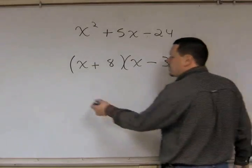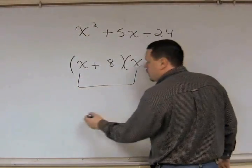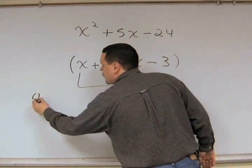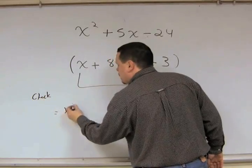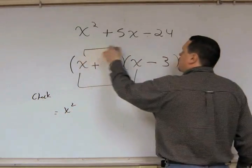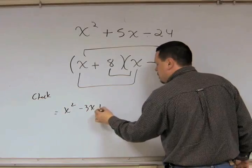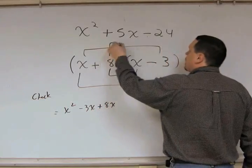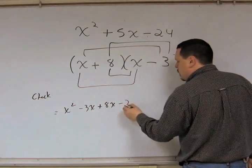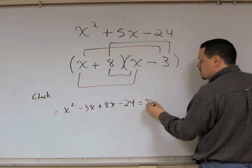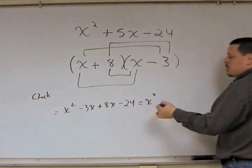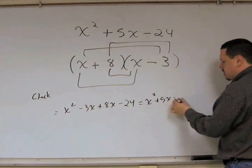To check this, we're going to FOIL this out. So, your firsts is x squared. Your outers is minus 3x. Your inners is plus 8x. And lastly, or lasts is minus 24, which turns out to be x squared minus 3 plus 8 plus 5x minus 24.